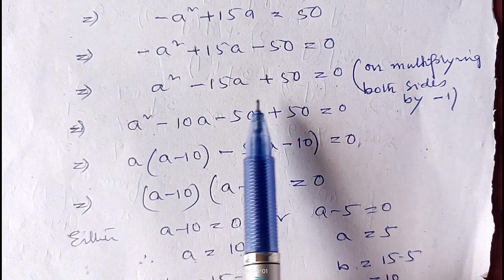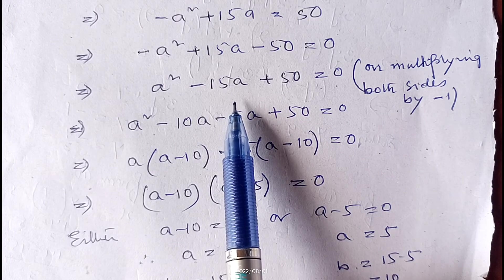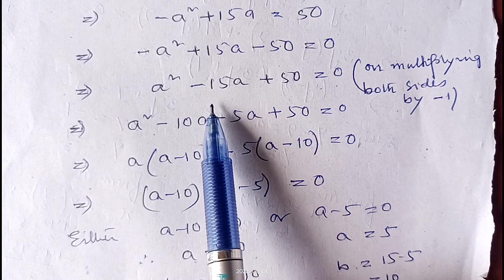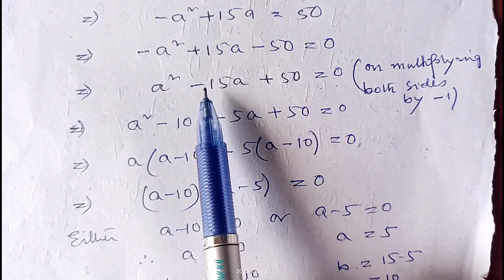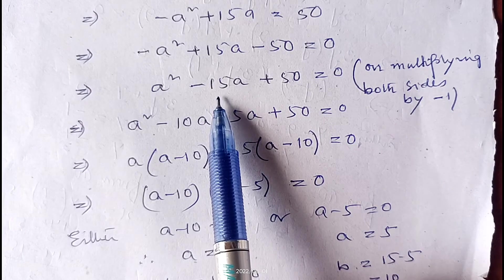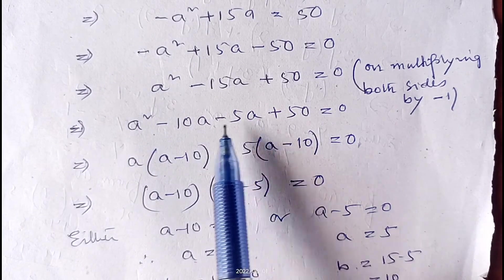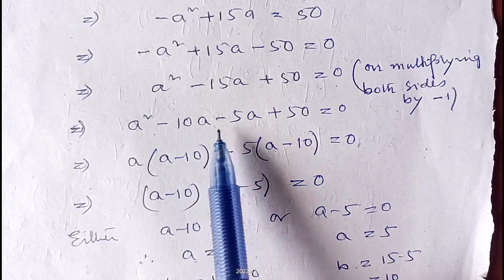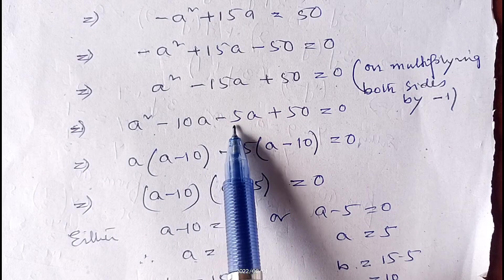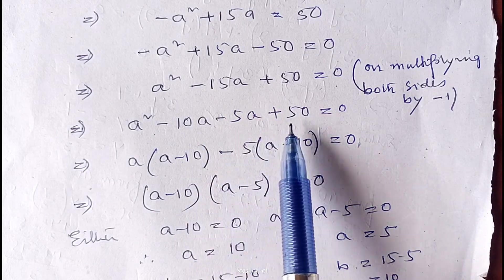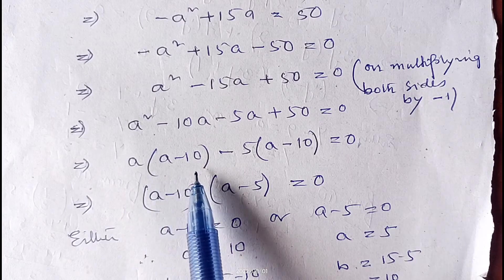Multiplying by −1 gives us: a² − 15a + 50 = 0. This can be solved by middle-term factorization because we know 10 + 5 = 15 and 10 × 5 = 50. So instead of 15a we write 10a + 5a. The next line becomes a² − 10a − 5a + 50 = 0. From the first two terms, taking a common gives a(a − 10).